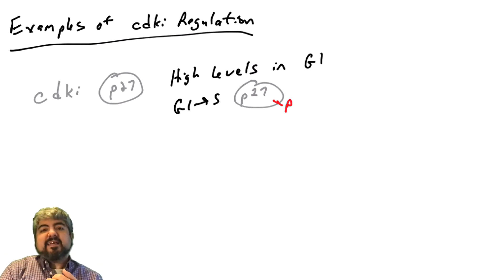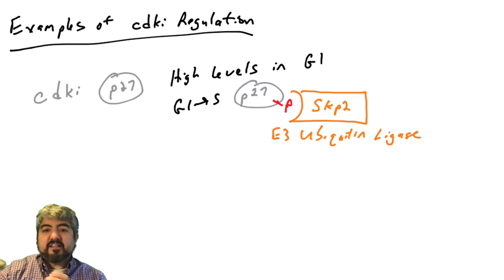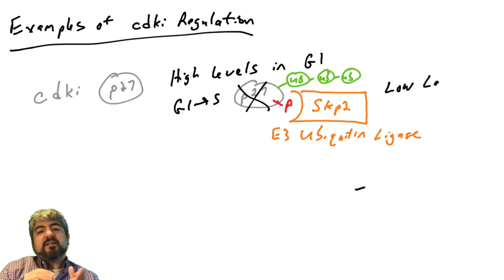So there are a number of different kinases that can phosphorylate P27, and this phosphorylation allows for P27 to now interact with a E3 ubiquitin ligase called SCIP2. So what is the ubiquitin ligase? Ubiquitin ligase is a protein, an enzyme that transfers ubiquitins to a protein. And we covered that in a previous video, ubiquitilation. So P27 becomes ubiquitilated, which sends P27 into the proteasome, and P27 is subsequently destroyed.